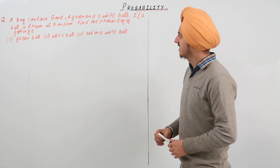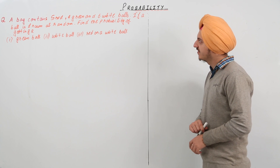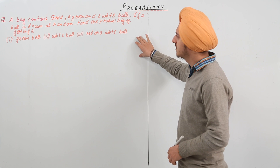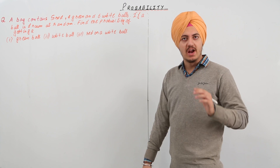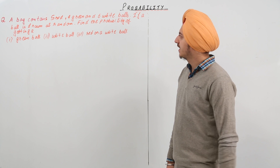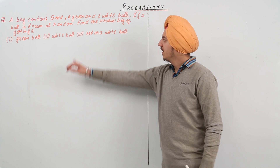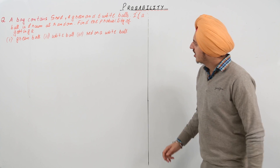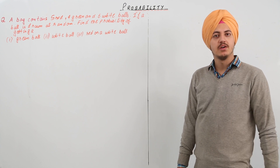The next question says a bag contains 5 red, 4 green, and 6 white balls. If a ball is drawn at random from the bag, find the probability of getting a green ball, a white ball, and the third is a red or a white ball.